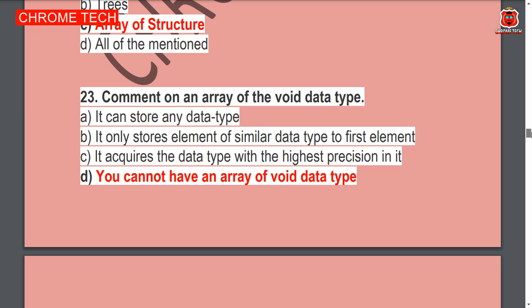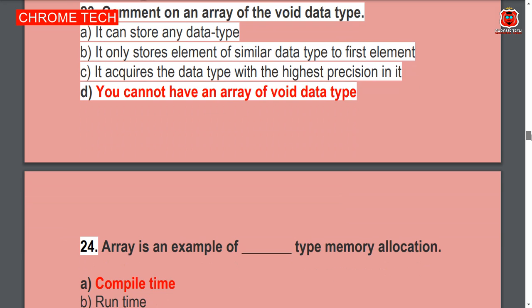Next question: Comments on an array of void data type. Option D is the correct answer — you cannot have an array of void data type.